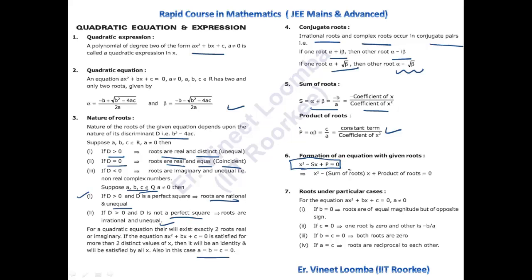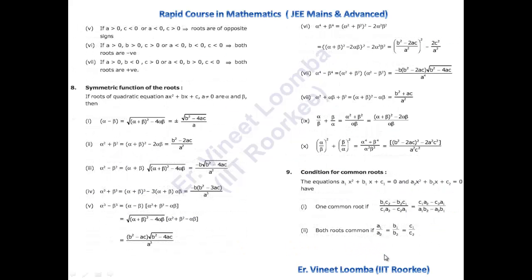If we know the sum S and product P of roots, the quadratic equation can be written as x² − Sx + P = 0. For roots under special conditions: if b = 0, the equation becomes ax² + c = 0, giving two roots of equal magnitude but opposite sign. If c = 0, one root is 0 and the other is −b/a. If both b and c are 0, both roots equal 0.